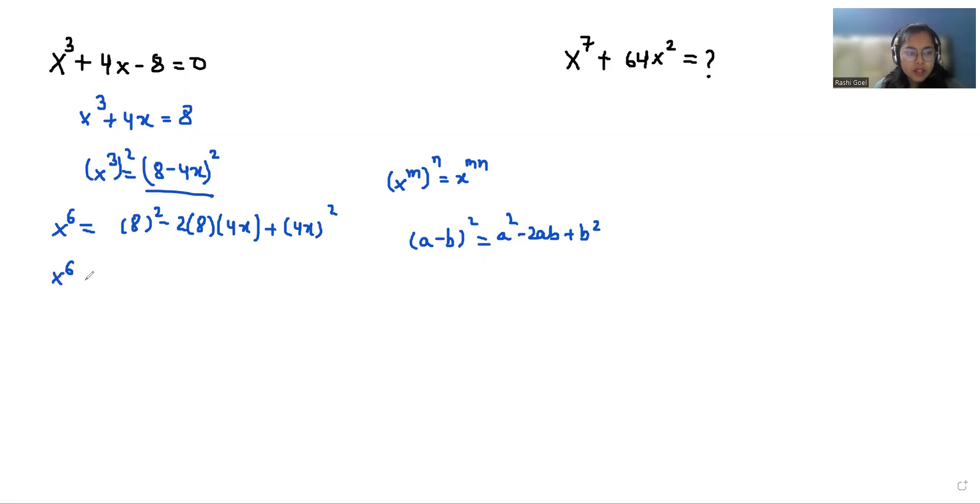So x⁶ = 64 - 64x + 16x². We need the value of x⁷, so we are going to multiply both sides by x.